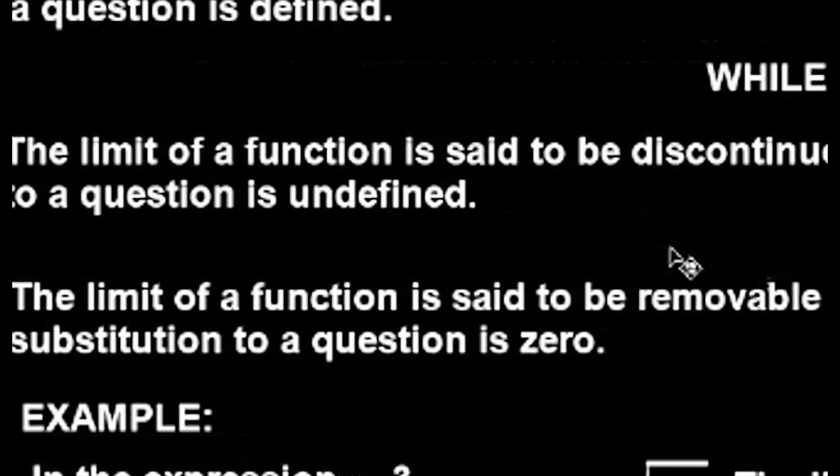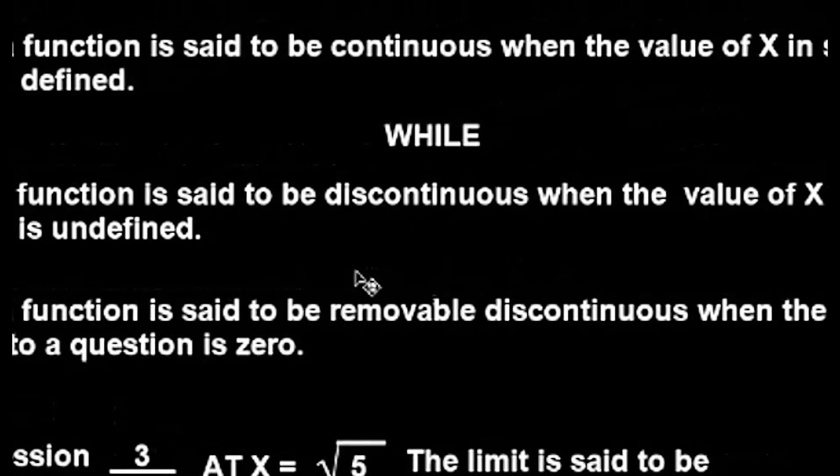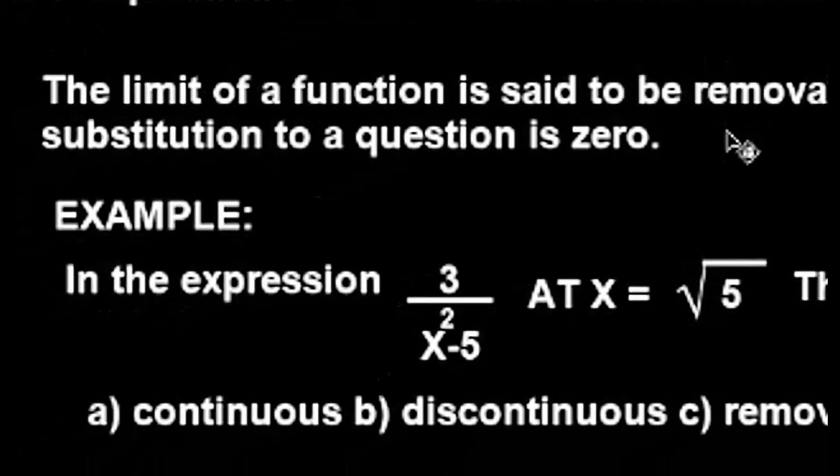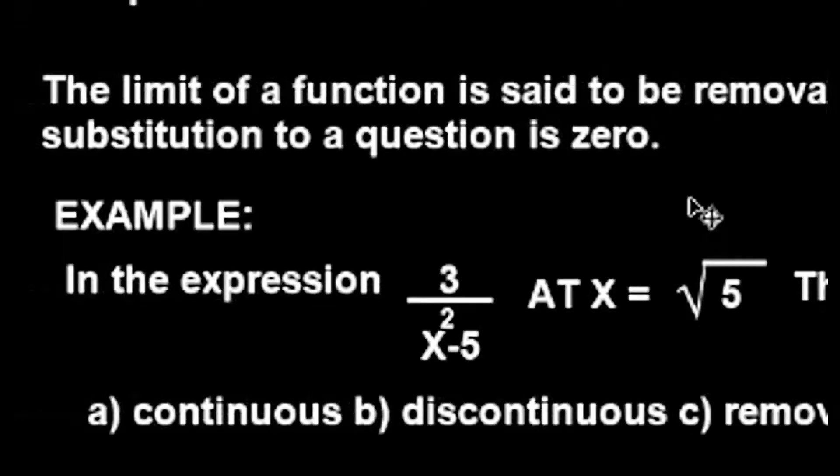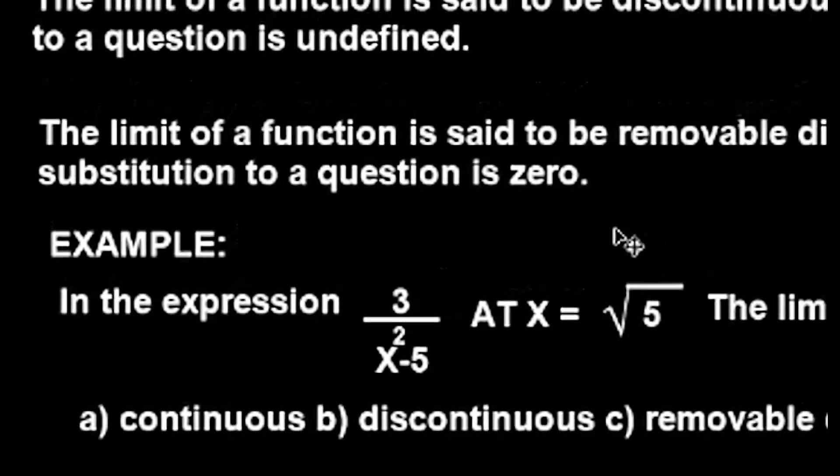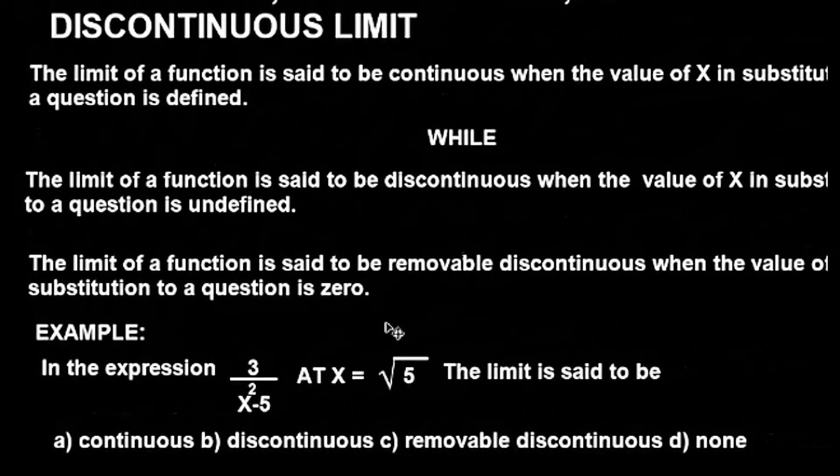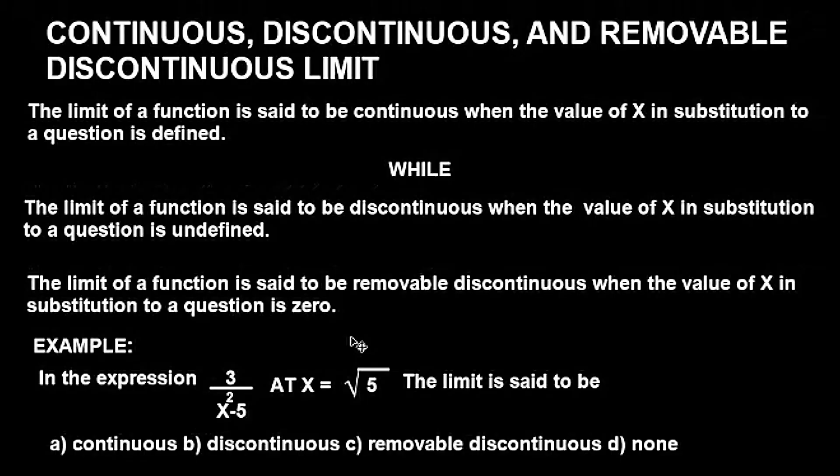The limit of a function is said to be removable discontinuous when the value of x in substitution to equation is zero. Now having known these basic definitions, let's look at the example.